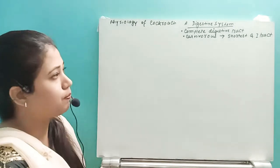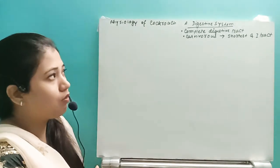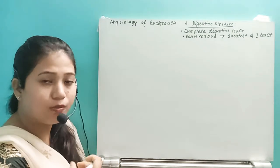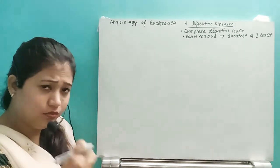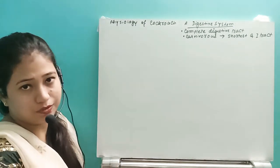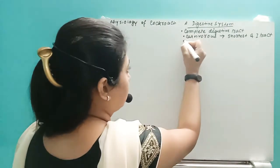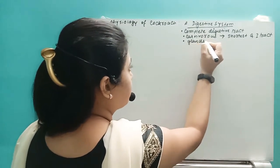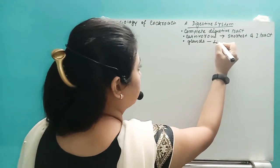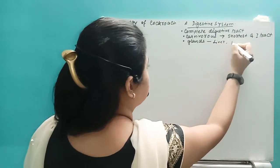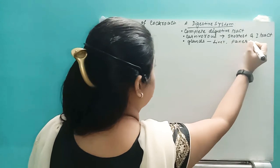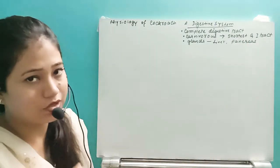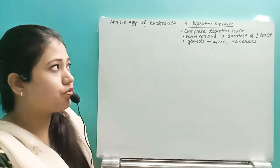Now, the digestive system is basically made up of two glands: one is the liver and another is the pancreas. Along with that they have the GI tract.